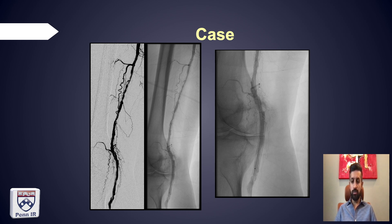This is a patient referred in with recurrent rest pain. He has an old Zilver PTX stent across the distal SFA with some in-stent restenosis, a superior stent across the knee joint, single-vessel runoff via the PT, and a stent in the TP trunk as well.